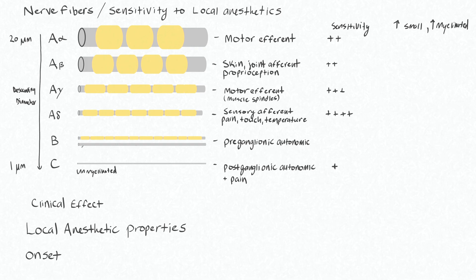Because some of the B fibers are still myelinated, you'll have mixed sensitivity, so overall this class of nerve fibers is intermediate sensitivity — but definitely more sensitive than the C fibers, where none of them are myelinated.